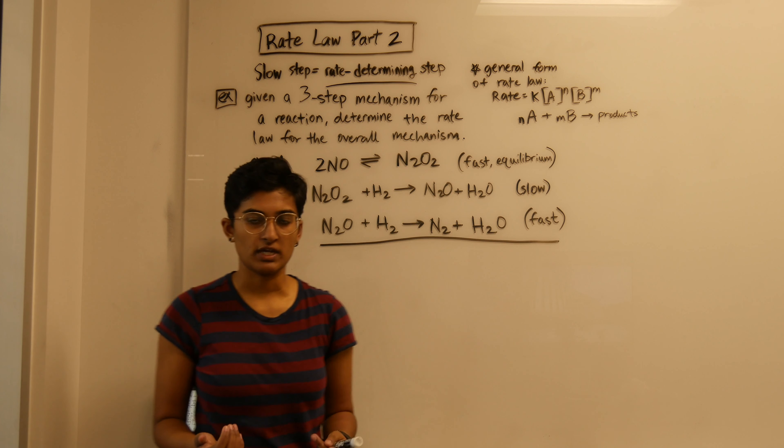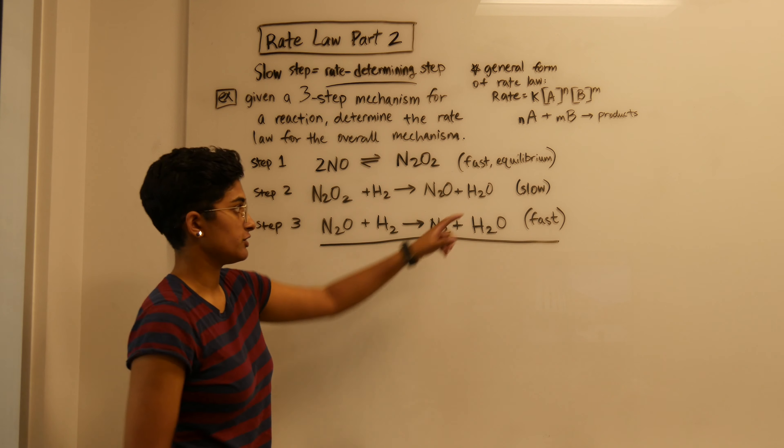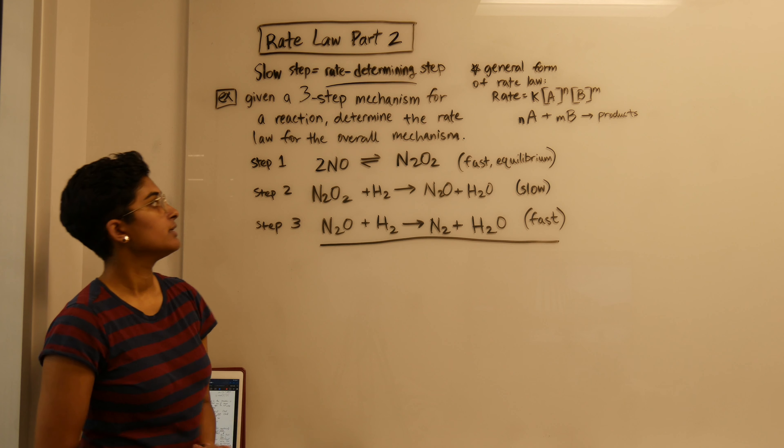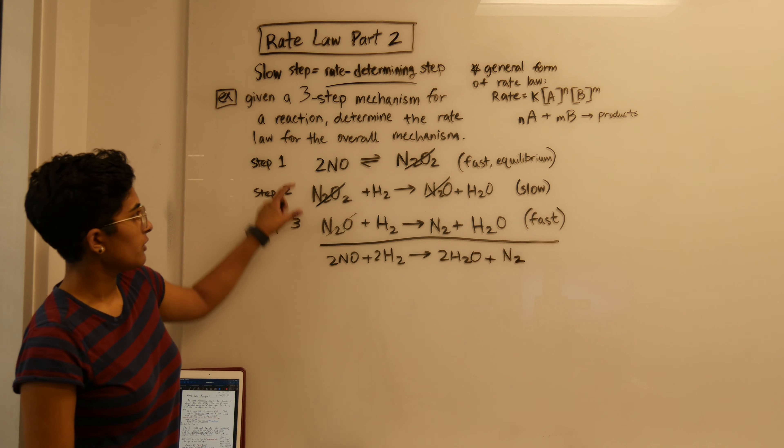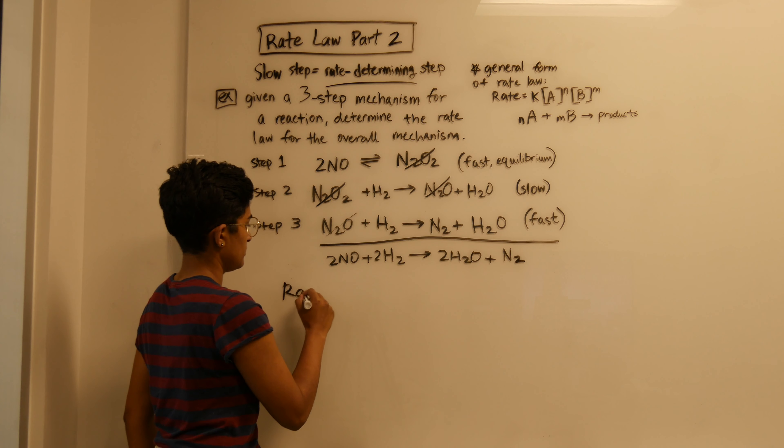This is the second way you could solve a rate law problem — what you would do if your slow step was not your first step. The slow step is our rate-determining step. First, we can write the overall reaction: these would cancel, these would cancel, and we would be left with 2NO plus 2H2 gives you 2H2O plus N2.